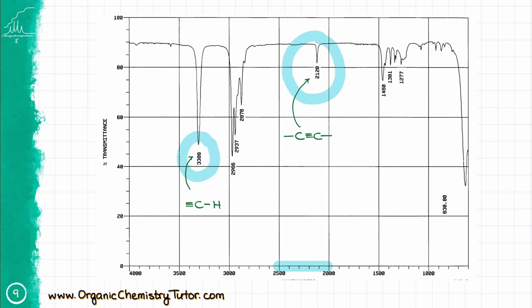But if it is a terminal triple bond like what we have here, we are going to have a sharp spike at almost exactly 3300 centimeters, which is the SP hybridized carbon hydrogen stretch. It's a somewhat rare signal since we are only going to see it for the terminal triple bond, but nonetheless, you should be familiar with this signal.